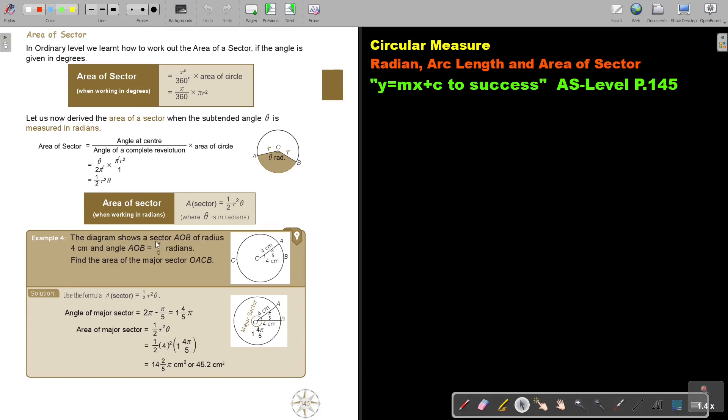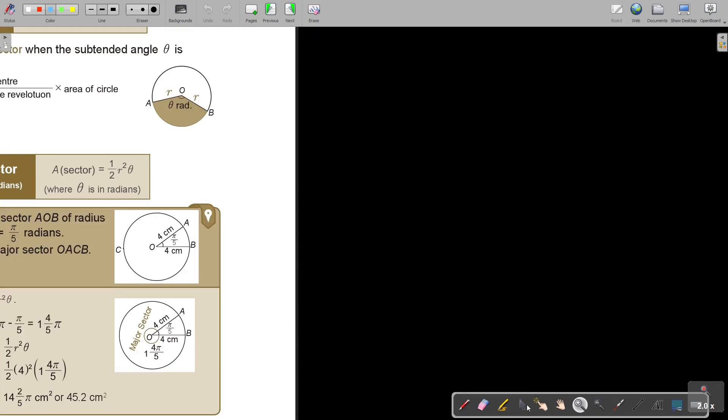The diagram shows sector AOB of radius 4 and angle AOB equals π/5 radians. Find the area of the major sector OACB. So first we must work out that angle. I'm going to make it a bit bigger. Do you see better?